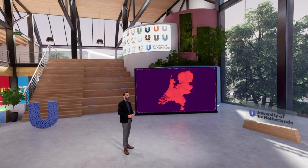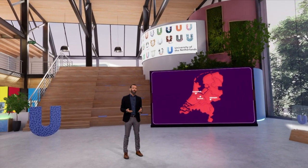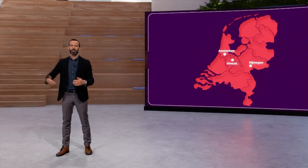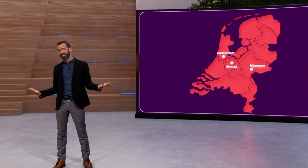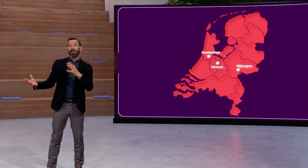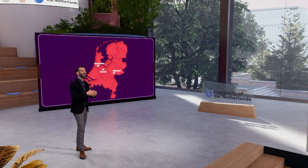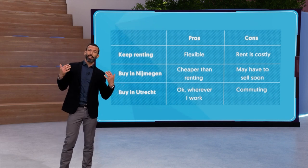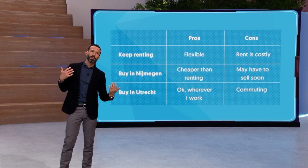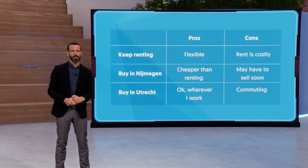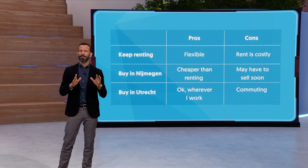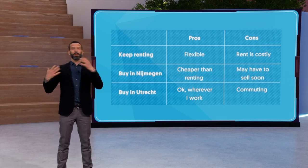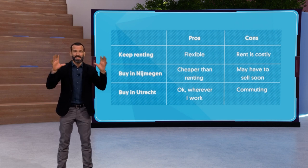Imagine you currently live in Neumachen, where you rent an apartment. Your current job is in Neumachen, but you don't know for how long — it may be moved to Amsterdam, where your employer has another office. What should you do? Keep renting? Buy an apartment in Neumachen? Or buy an apartment between Amsterdam and Neumachen in Utrecht? Should we make a list of pros and cons? Keeping renting gives flexibility but it's costly. Buying in Neumachen would be cheaper, but you might lose money if you have to sell the house very soon. Buying in Utrecht would be okay wherever you work, but with a lot of commuting. All actions have pros and cons — we need a way to give weights to all these arguments and compare them.